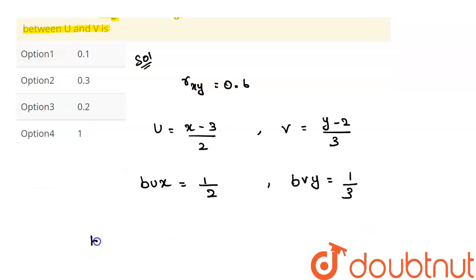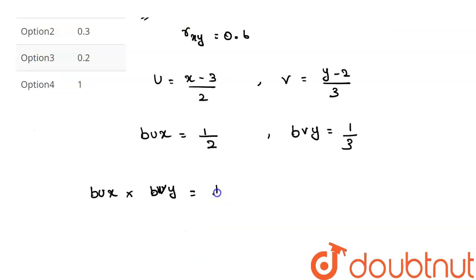Here, bux into bvy, 1 divided by 2 into 1 divided by 3, this is equal to ruv divided by rxy.